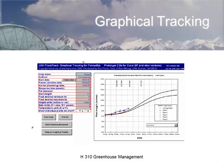How do you know when to apply? Do a graphical track. This is the University of New Hampshire FloraTrack system developed by Paul Fisher, who is now at the University of Florida. This is being used for all different cultivars. To use graphical tracking technology today, you just log into the eGRO website or other plant propagator websites. You can see scheduled application points for Cycocel, B9, or combinations across the crop production timeline.